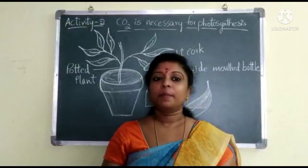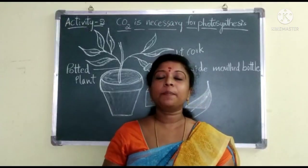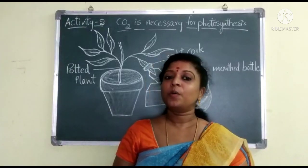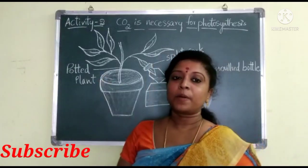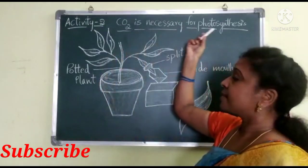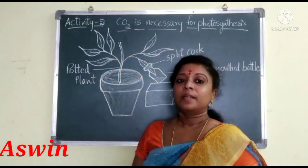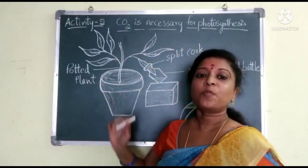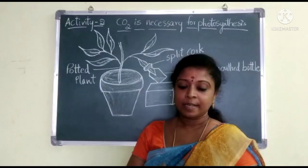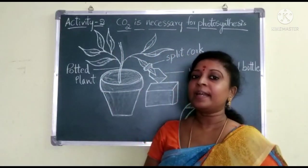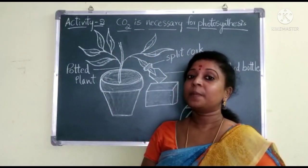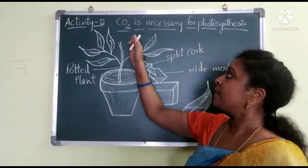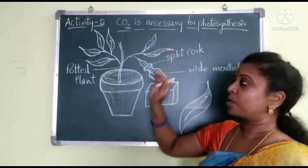Hello students. In the previous session we learned that chlorophyll plays a key role in photosynthesis. Now in this activity we are proving that CO2 is necessary for photosynthesis. In the first part we learned that to perform photosynthesis a plant needs carbon dioxide, sunlight, and water in the presence of chlorophyll. Now here we are proving that CO2 is necessary for photosynthesis.